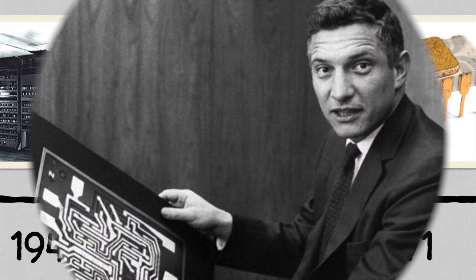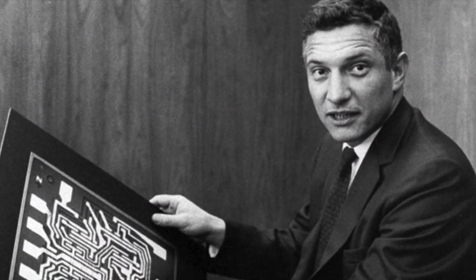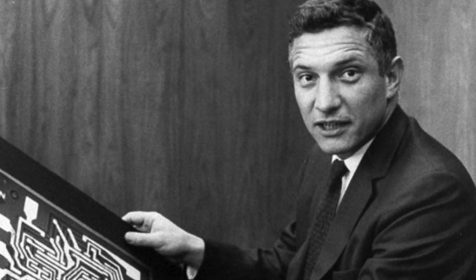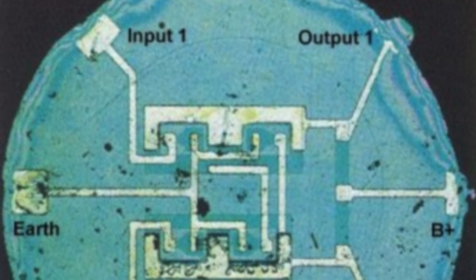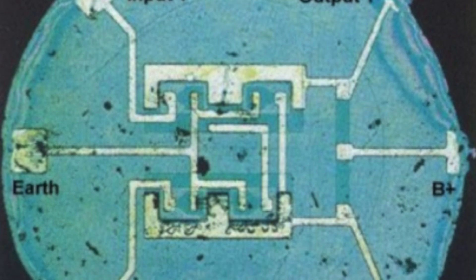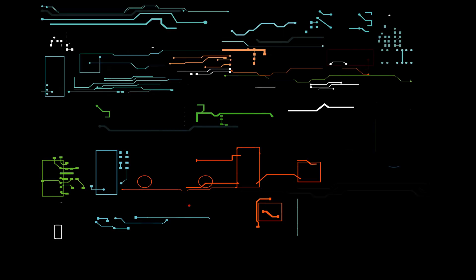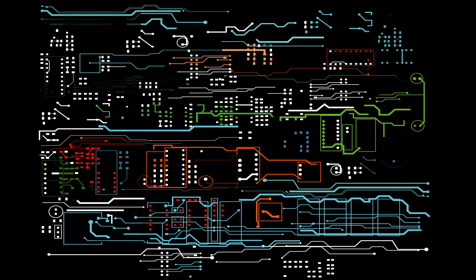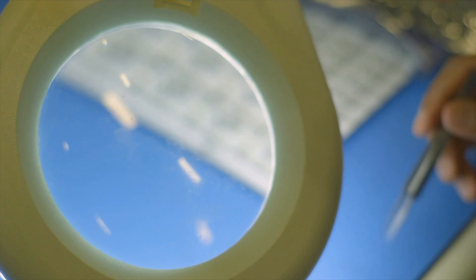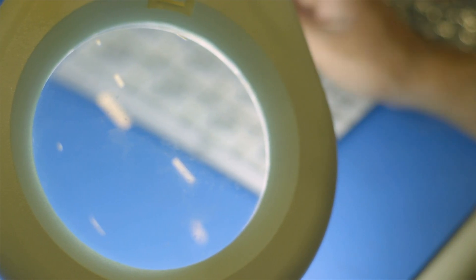A decade later, in 1959, Robert Noyce grouped on a single silicon chip a bunch of small transistors and created the first integrated circuit, called the Noyce monolithic IC, which is still used as a base for modern integrated circuit chips. IC chips were outperforming traditional transistors since they were faster and much more efficient.